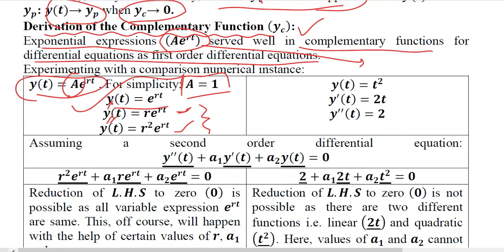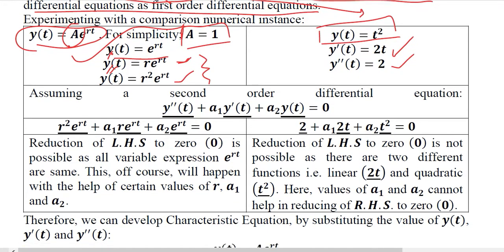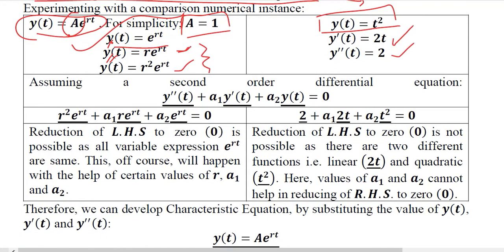And assuming that if we use this as the solution we take its derivative it becomes 2t and then we take its derivative it becomes 2 only. So we can consider both of these possibilities and then we can compare them.